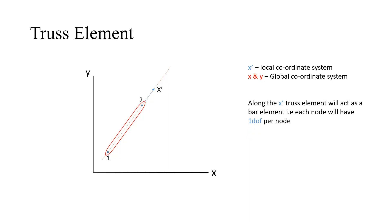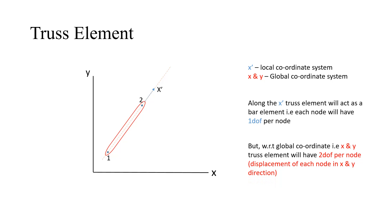After the application of force along the X dash direction, the truss element will act as a bar element — it is similar to the bar element. Each node of a truss element will have 1 degree of freedom per node in the local system, so it deforms only in the X dash direction. If we consider it with respect to the global coordinate system, the truss element will have 2 degrees of freedom per node — displacement in both X and Y direction.